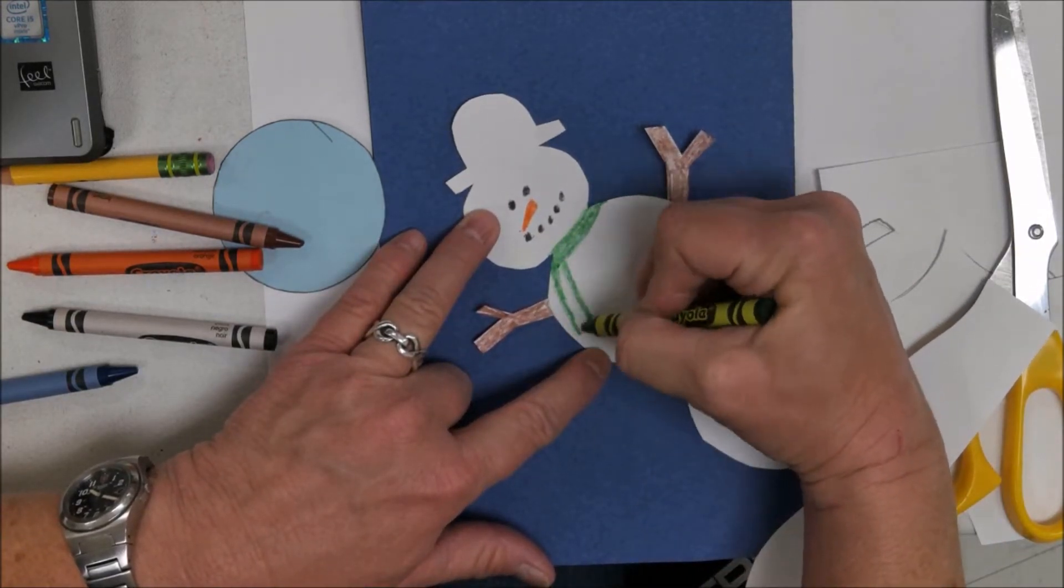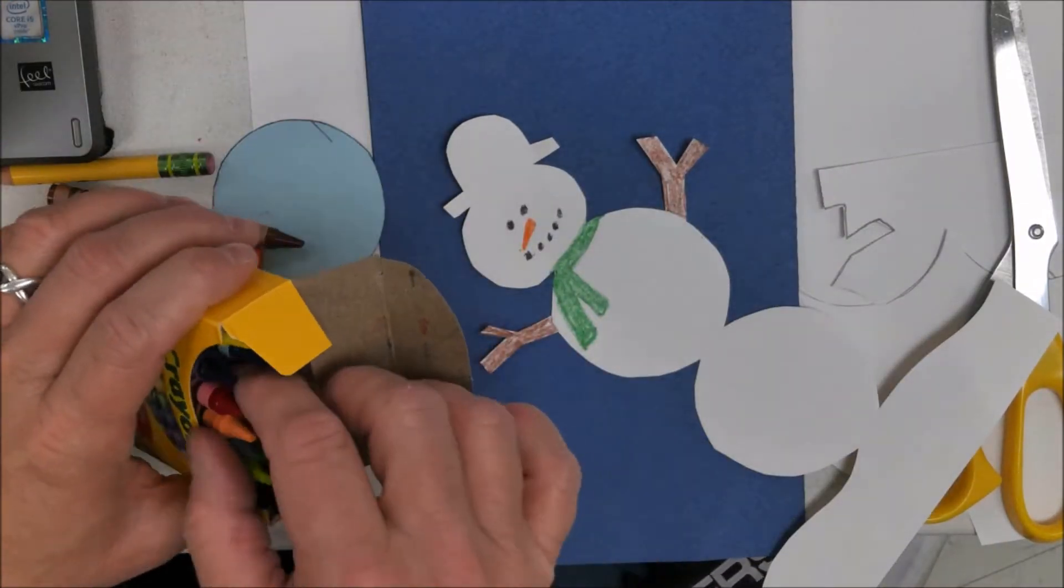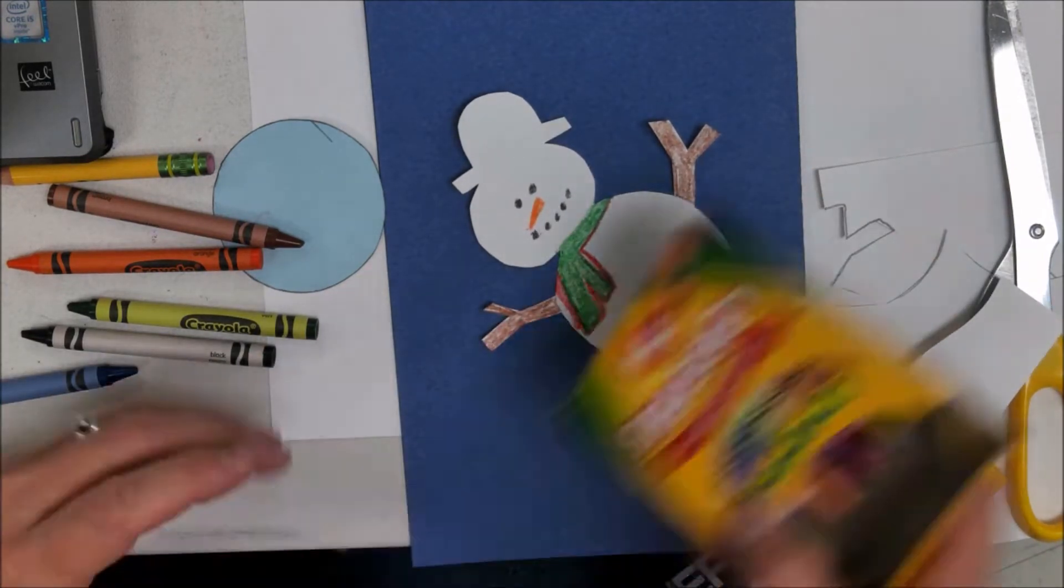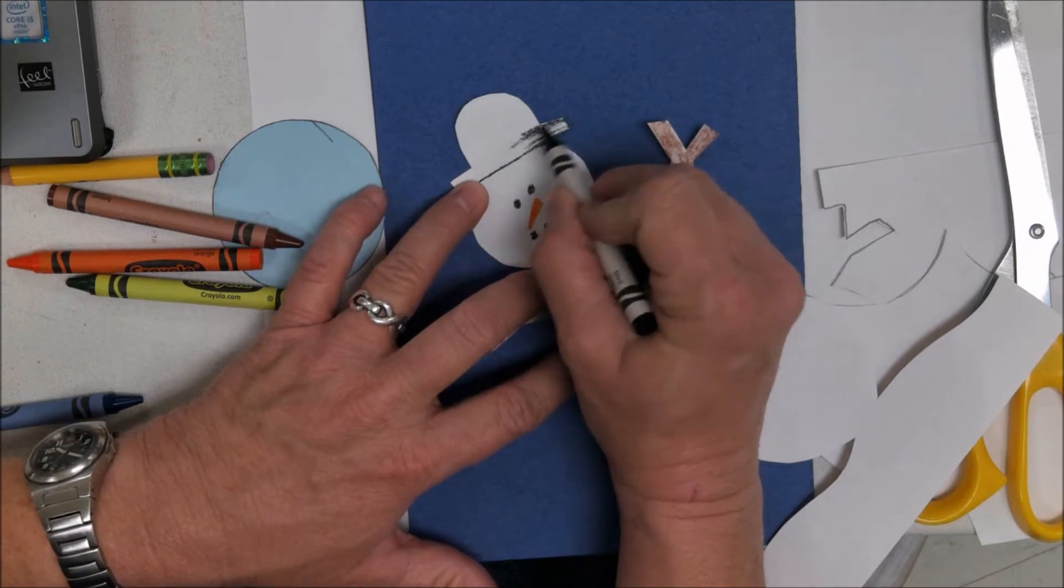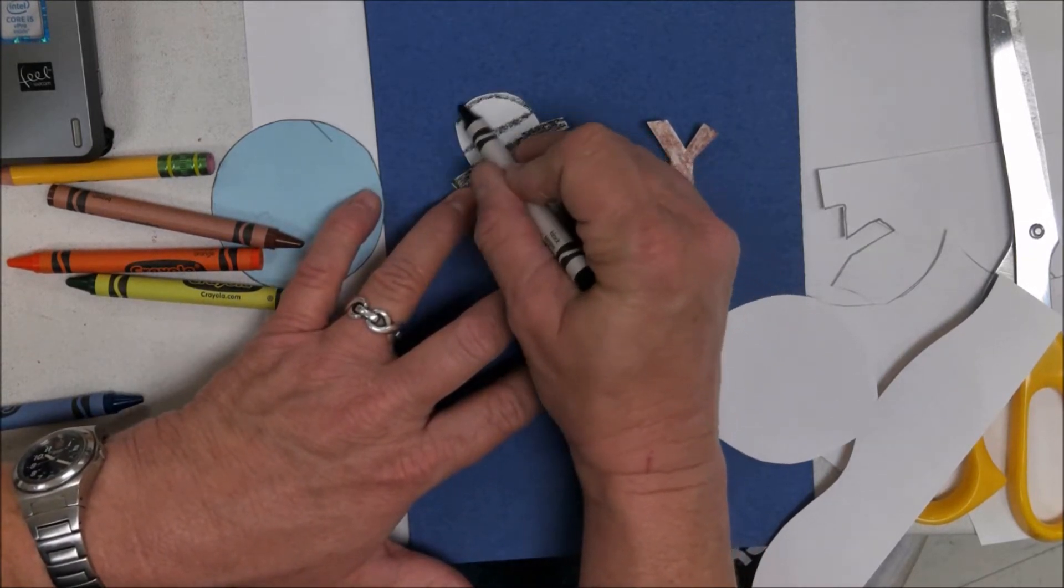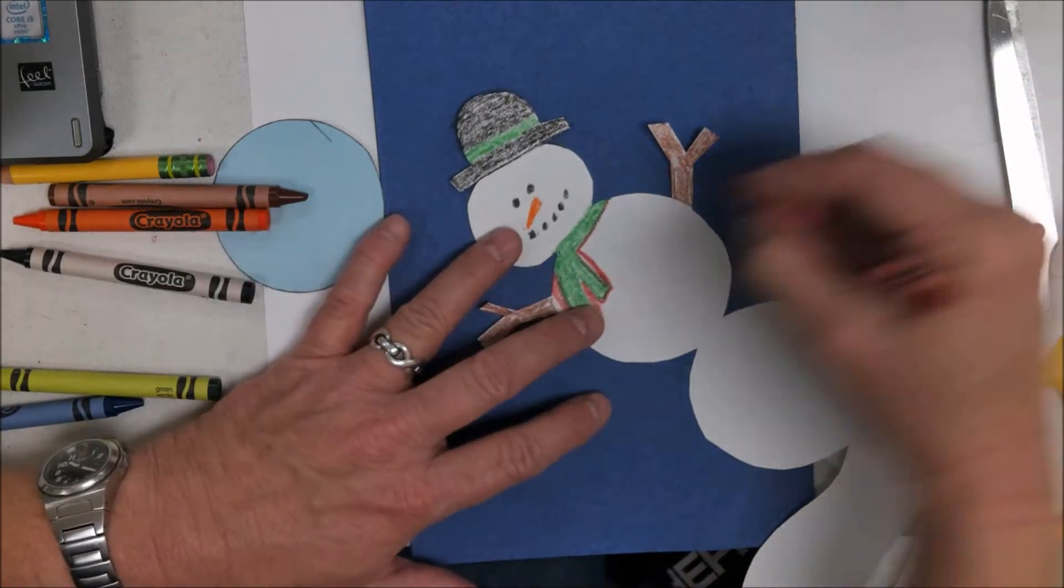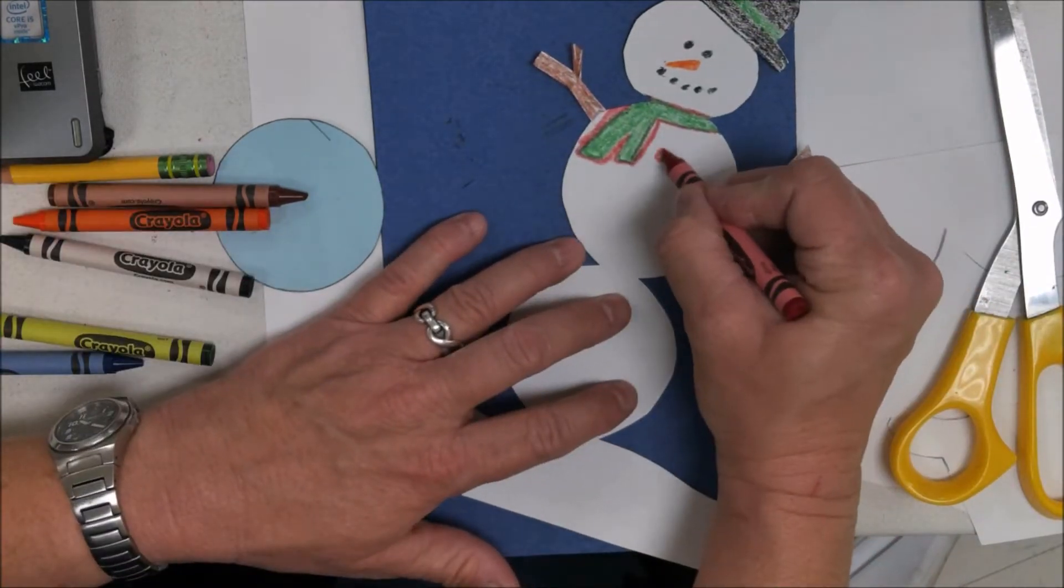Look at that frosty go, over the hills of snow. Frosty the snowman was a jolly happy soul, with a corncob pipe and a button nose and two eyes made out of coal.